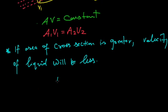It means if A2 is greater than A1, then velocity V2 will be less than V1.